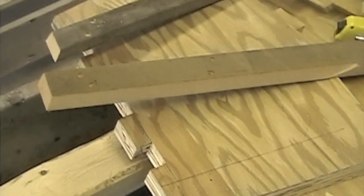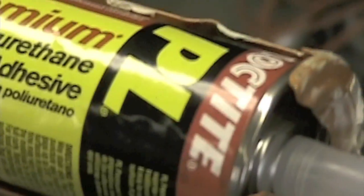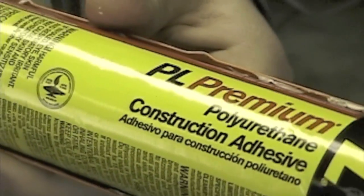All right, I've got a set of legs. All right, we're gonna put on the bow and glue them in place with some, what kind is that? PL, Loctite, premium? Polyurethane. Polyurethane structural adhesive.